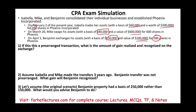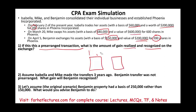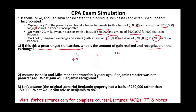If this is a prearranged transaction, what is the amount of gain realized and recognized? On the exam, you might have two columns — one for realized gain and one for recognized gain — and you have to fill in the amounts for Mike, Isabella, and Benjamin. The answers are the answers regardless of how the simulation is presented.